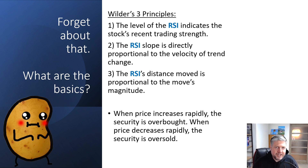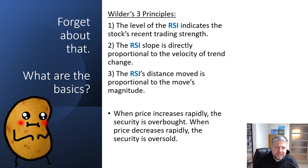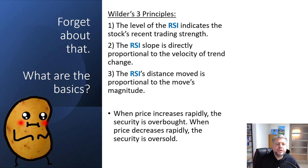Let's look at this from a fundamental standpoint. Wilder's three principles — this is like the Bible of RSIs. First, the level of the RSI indicates the stock's recent strength in trading — so if you have an RSI of 55, that's the level. Second, the RSI slope is directly proportionate to the velocity of the trend change — we're looking at the steepness of the line. Third, the RSI's distance moved is proportional to the move's magnitude, so if it's increasing in levels, there's a stronger price movement on the chart.